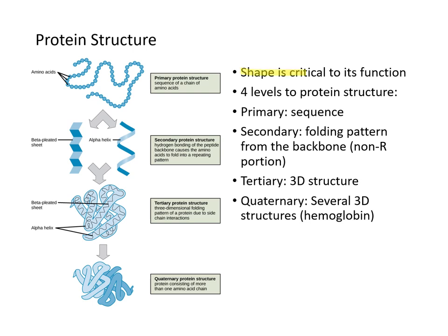Protein shape is absolutely critical for its function, and there are four levels of protein structure. The primary level is the sequence itself. The secondary structure is the folding pattern based on the backbone interactions — not the side chains — forming structures like beta-pleated sheets and alpha helices. The secondary structure then folds in three-dimensional space to create the tertiary structure. For some multi-unit protein complexes, a quaternary structure is required.